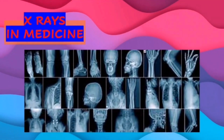Bones are the most opaque structures in the body. Cancer tumors, that is dense tissue, show up as unusually light regions in radiographs. These images are used by doctors to diagnose diseases, detect foreign objects in the body, examine dental casualties, and study damage of broken bones.